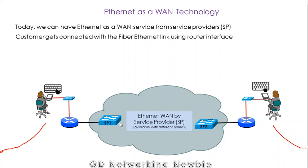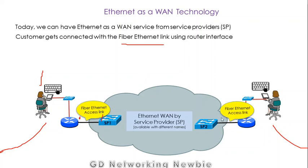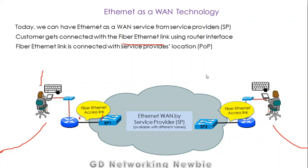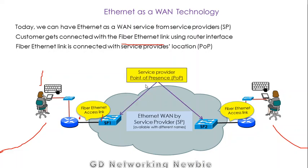The customers — the users — are connected with a fiber Ethernet link. From this point to this point on both sides we have a fiber Ethernet access link, and these customers are connected using a router interface. The router connects the customers to this fiber link, which is further connected to the service provider's location. These locations are also known as points of presence.